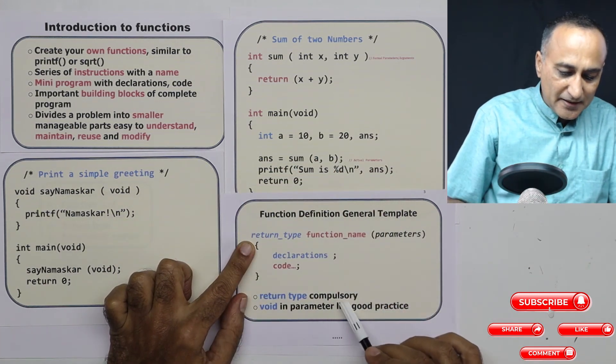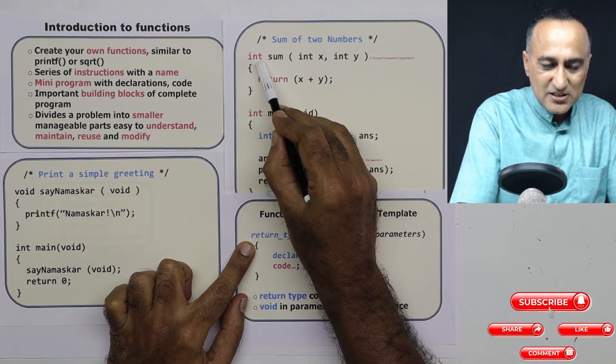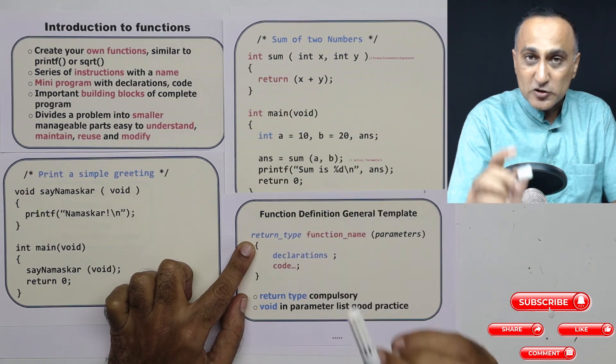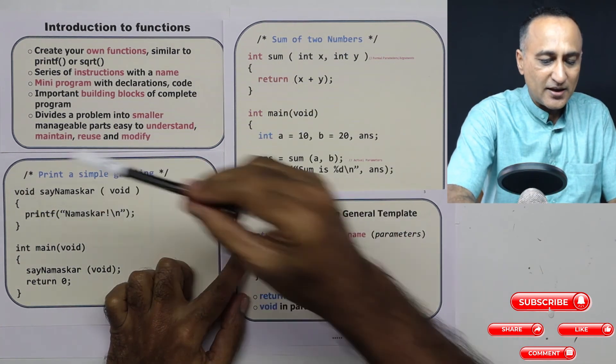So return type is compulsory. That means if it is returning int, you say int. If it is returning float data type, you have to say float. If it is not returning anything, you have to say clearly void.